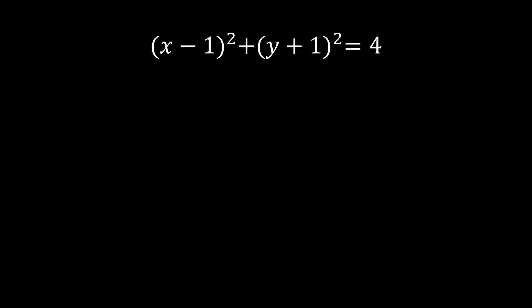Let's start by expanding (x minus 1) squared. You may do special product, or you may do (x minus 1) times (x minus 1) and use the FOIL method. Let us start with the special product.